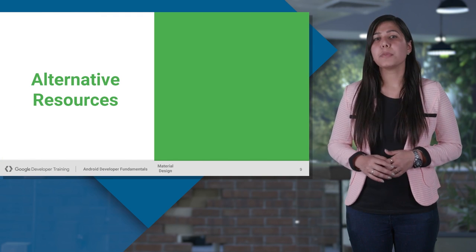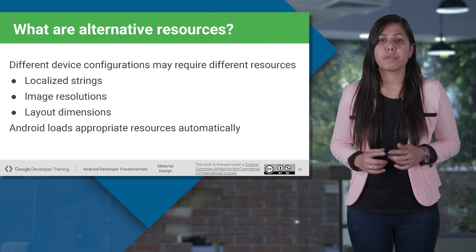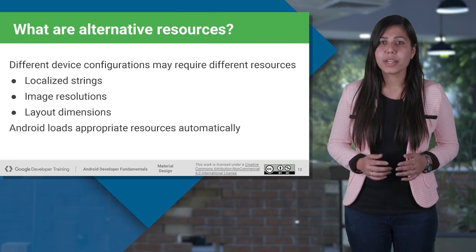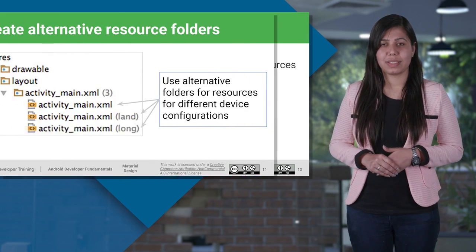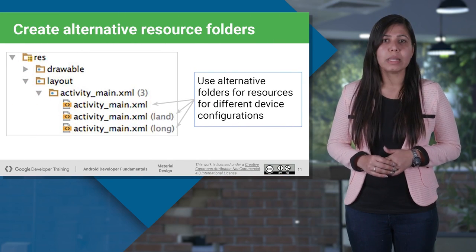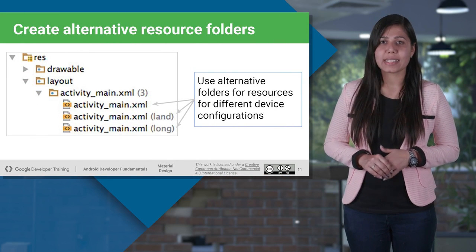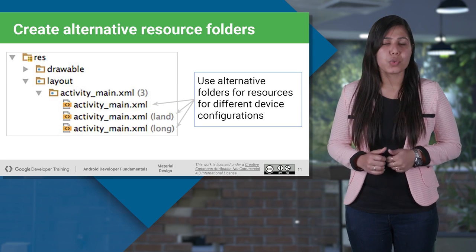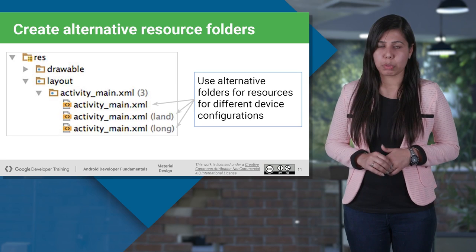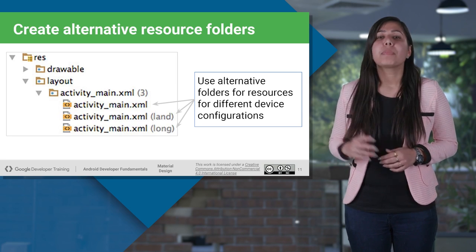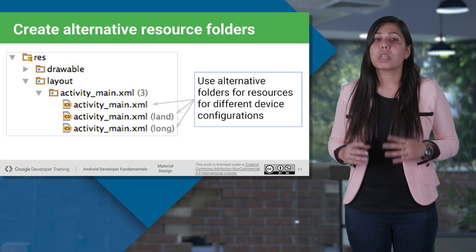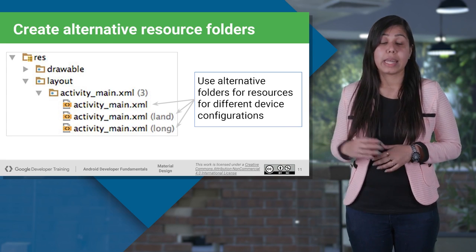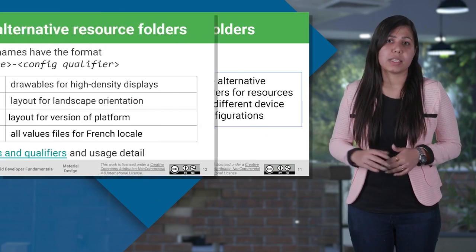Resources. As mentioned, we need alternative resources for different languages, and alternative drawable resources for different screen resolutions. Every drawable is stored as an individual file in one of the drawable folders. For example, each XML file under main activity supports a different device configuration, like landscape and long devices.